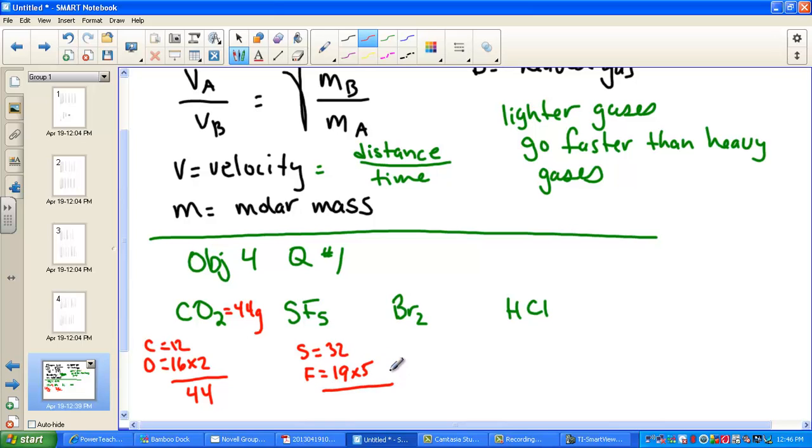Bromine has a formula weight of 80. We can just round that, but I know there's two of them, so here we have 160. H weighs 1, chlorine is 35.5, so here we have a molar mass of 36.5 grams.